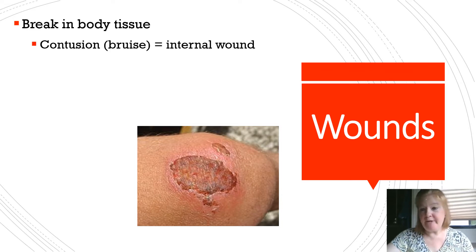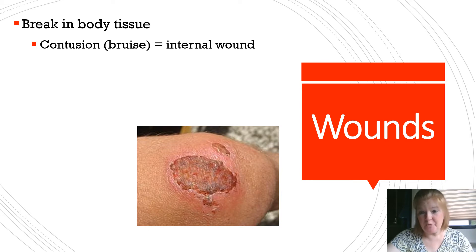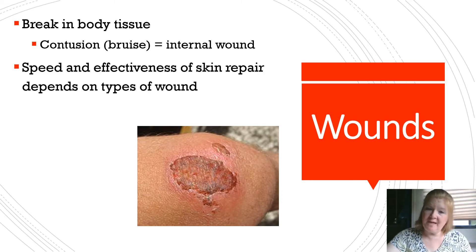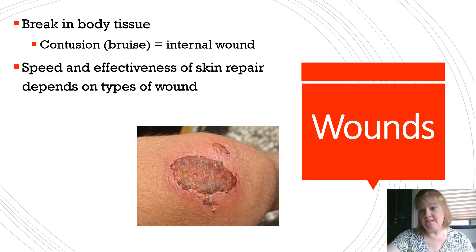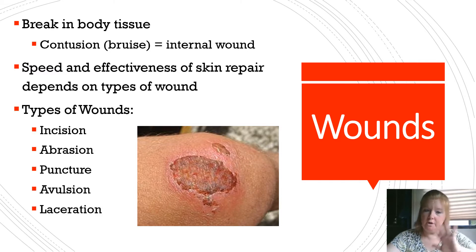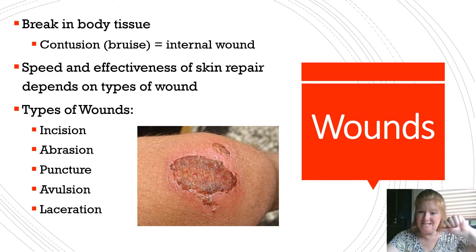A wound is a break in body tissue. A contusion or bruise is an internal wound — bleeding on the inside. The speed and effectiveness of skin repair depends on the type of wound. We'll cover five main types: incisions, abrasions, punctures, avulsions, and lacerations.